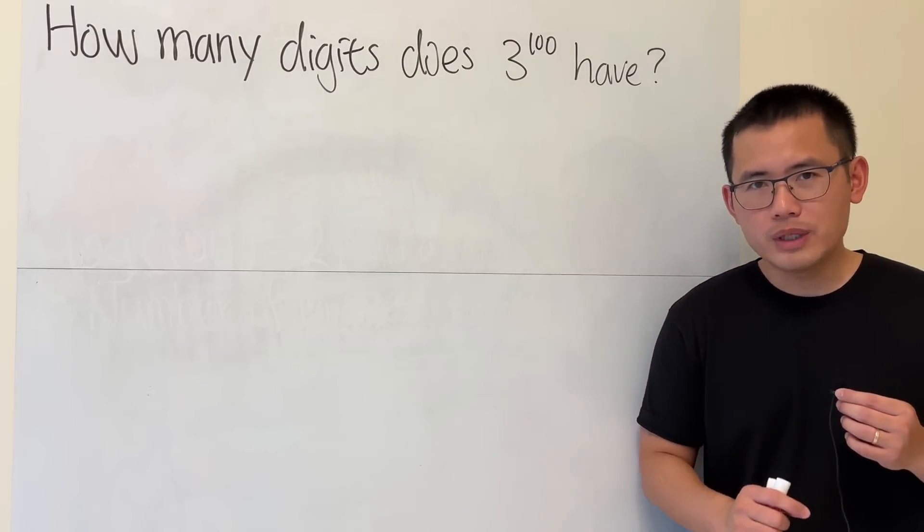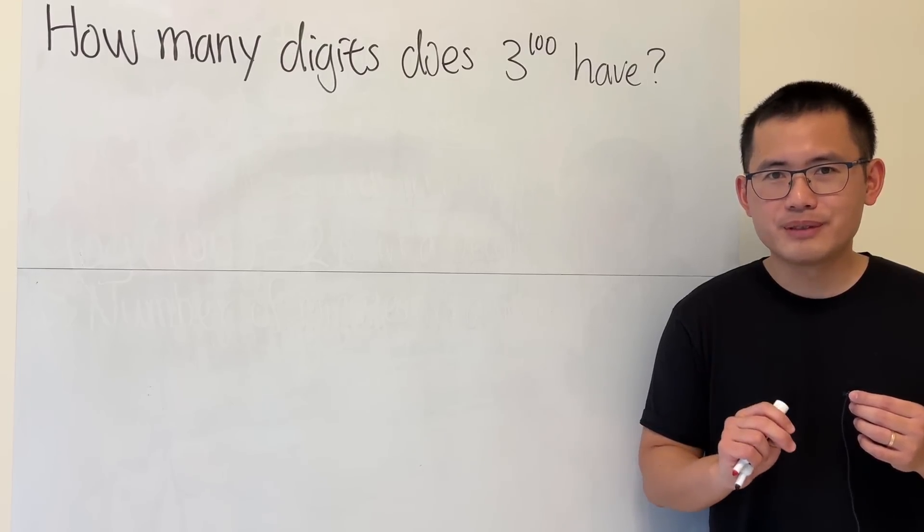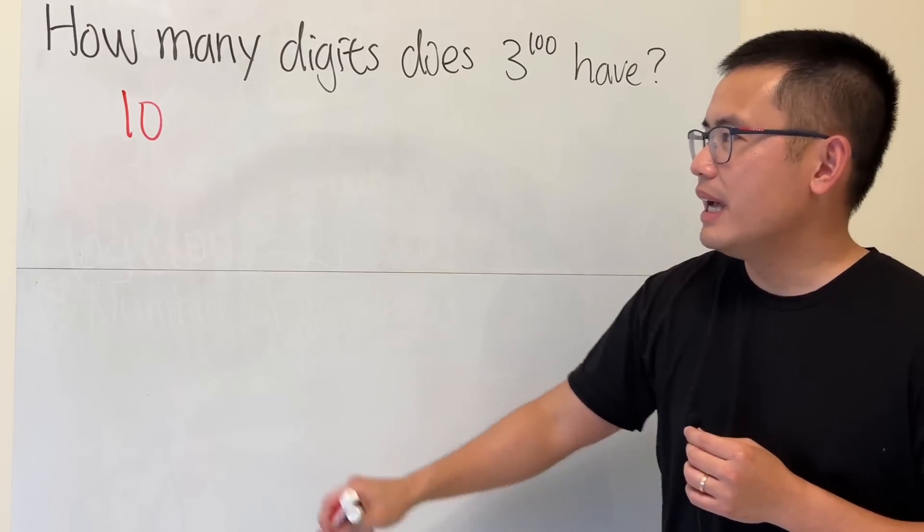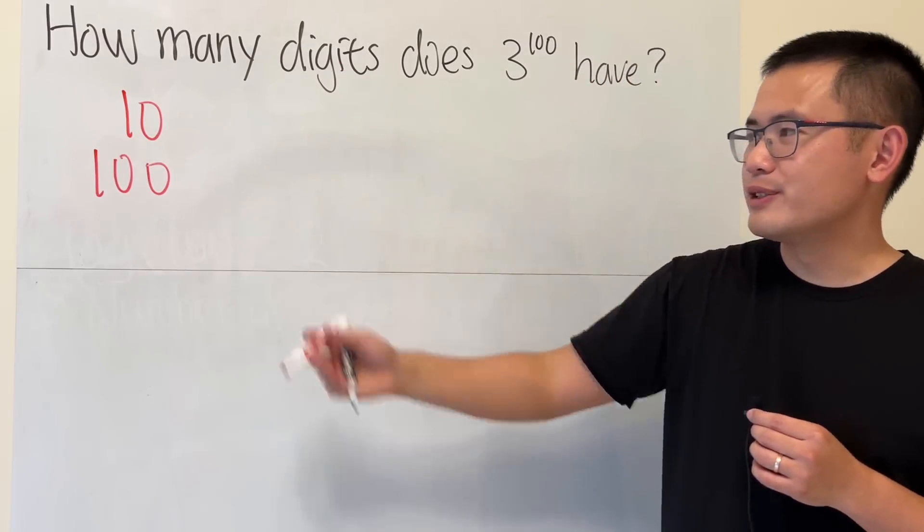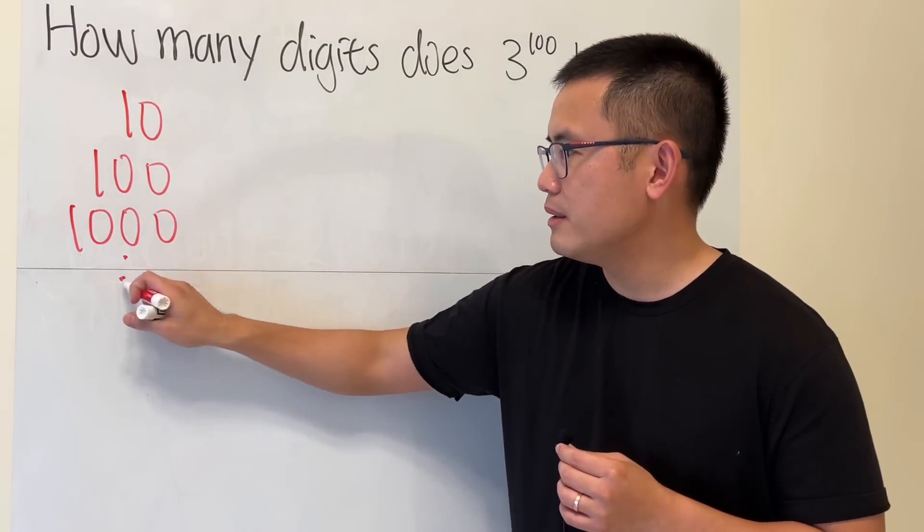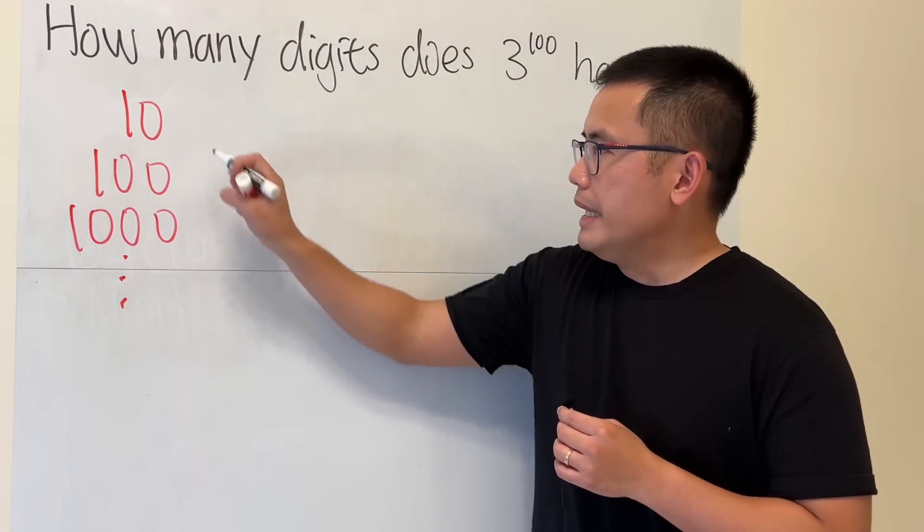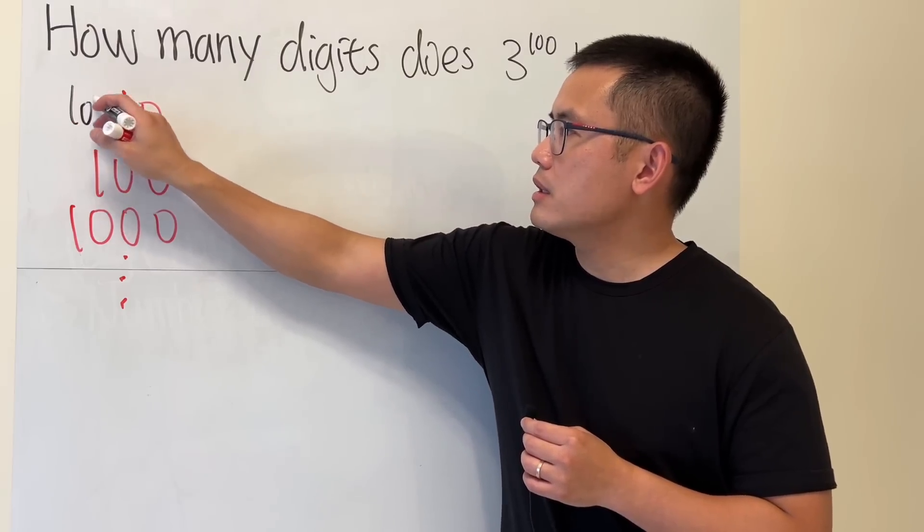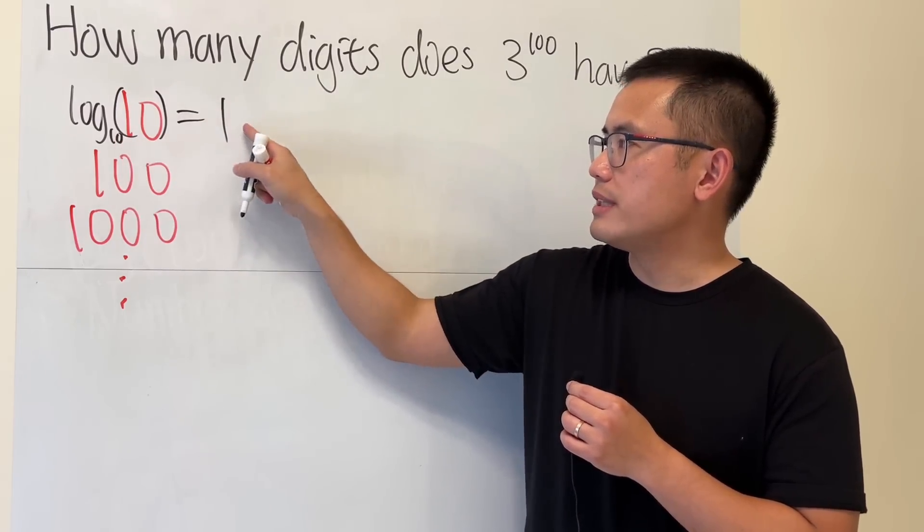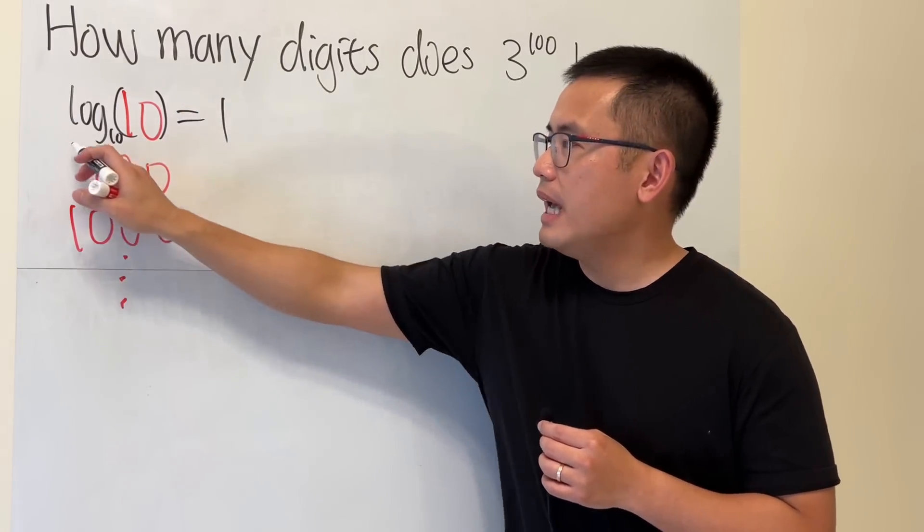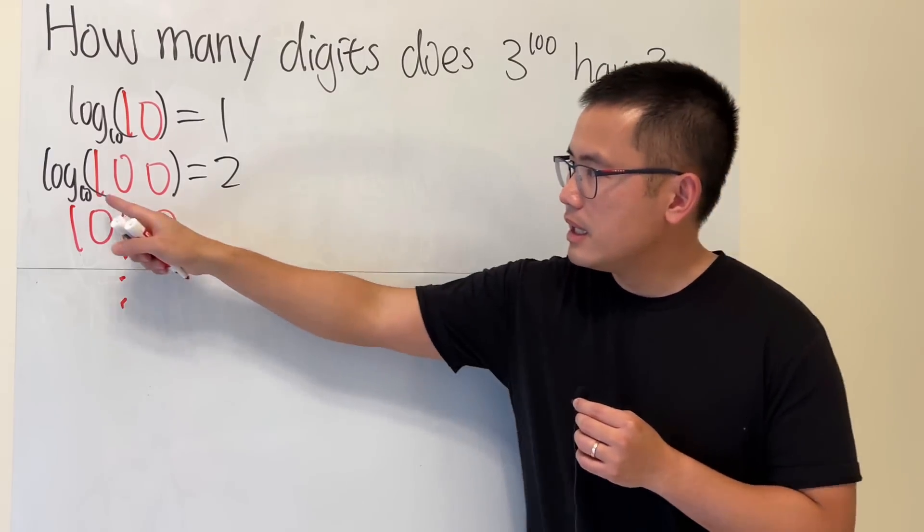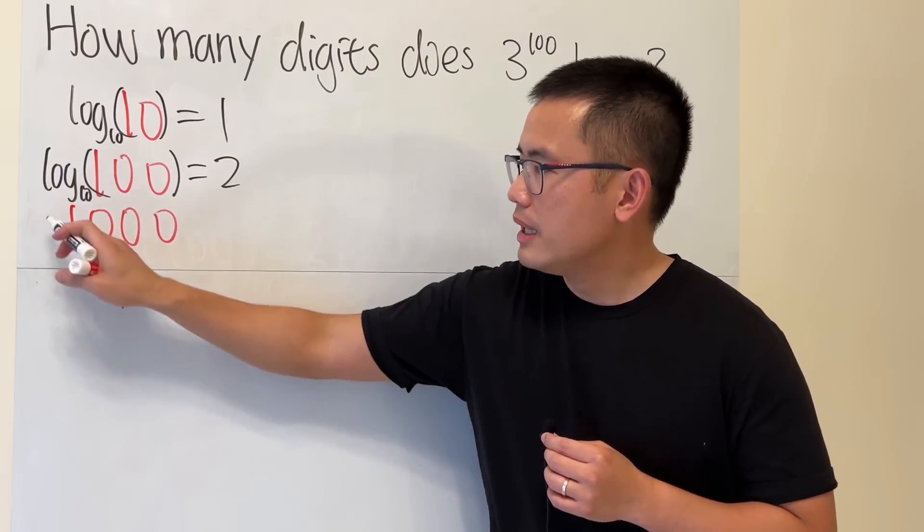What's the first two-digit number? It's 10. If you have 10, it has two digits, and if you have 100, this is the first three-digit number. Now check this out: if we take log base 10, then we just get 1 because 10 to the first power equals 10. And if you take log base 10 of 100, this equals 2 because 10 to the second power equals 100.